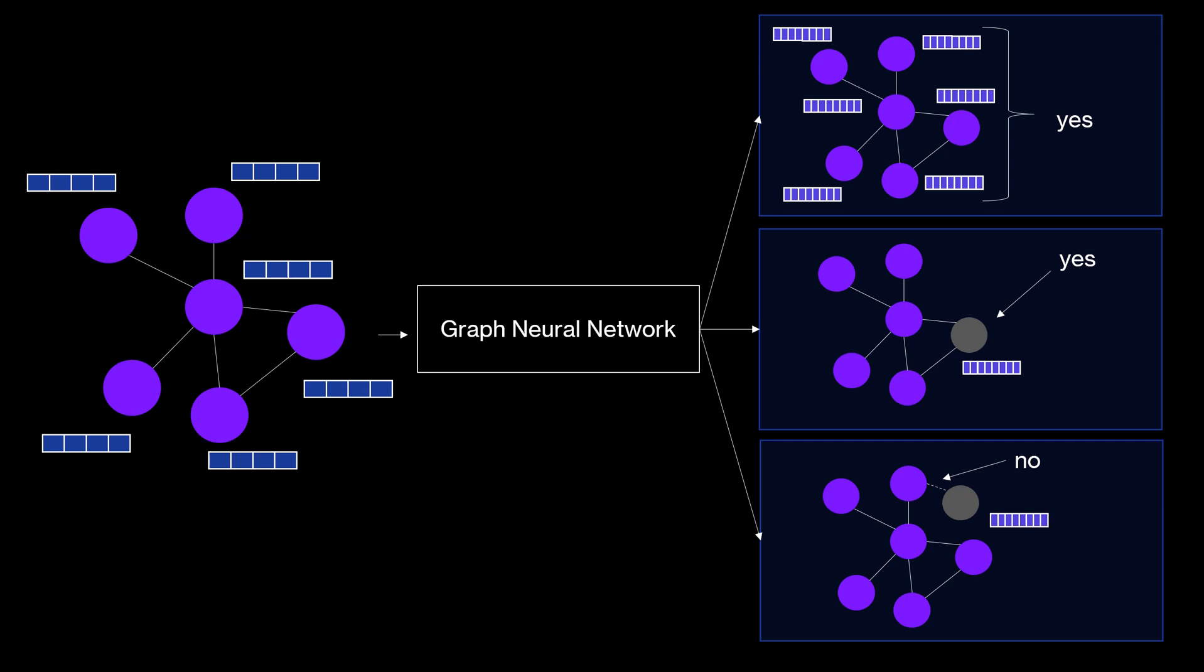Useful explanations on graph data are for example which nodes and edges were relevant, like for example the blue ones here. How relevant were they? We could assign importance scores and also how relevant were the node or edge features in the graph. This gives us a clear idea of what information was used to arrive at a certain prediction. The next question is how do we get these predictions?